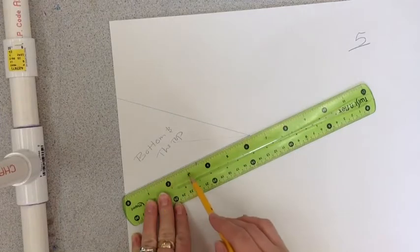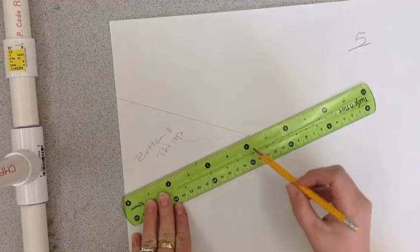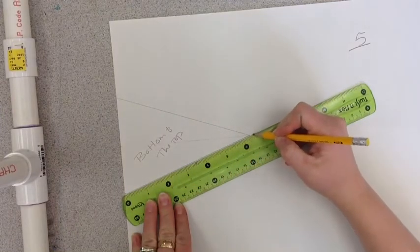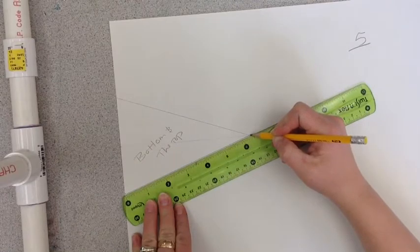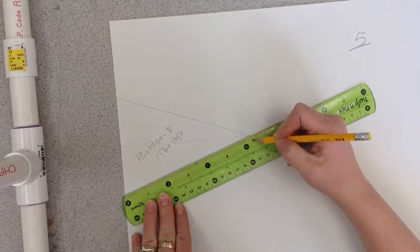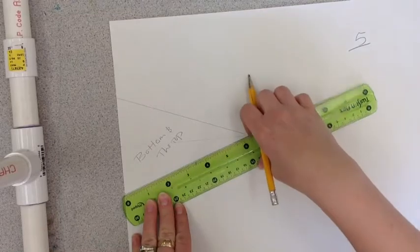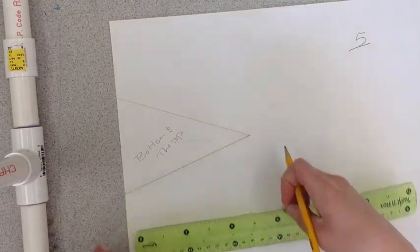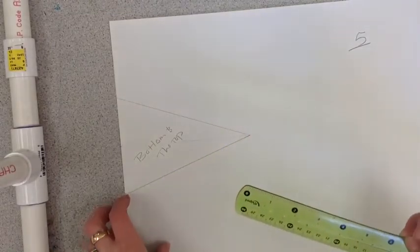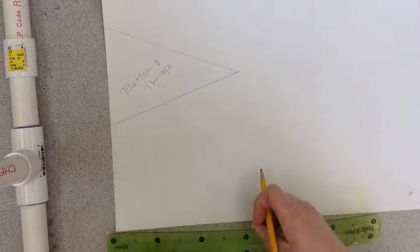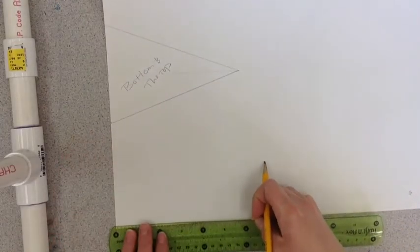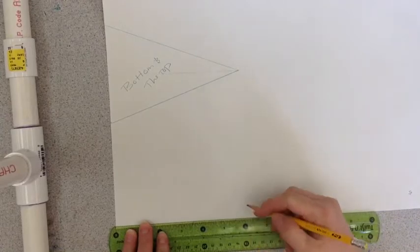Now I have one, two, three, four, five, six. And almost six and a half. I'm at this line. So I could kind of mark it with my pencil. And I'm going to bring that down to the bottom of the paper. And I'm going to measure across to that same mark.